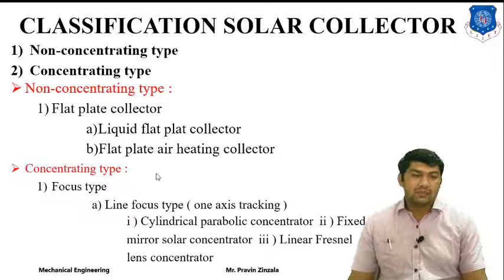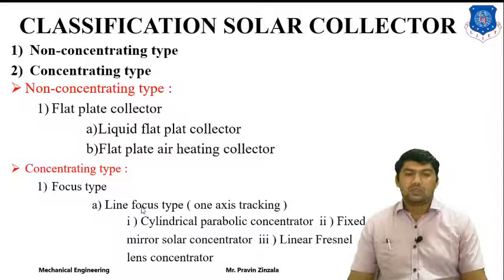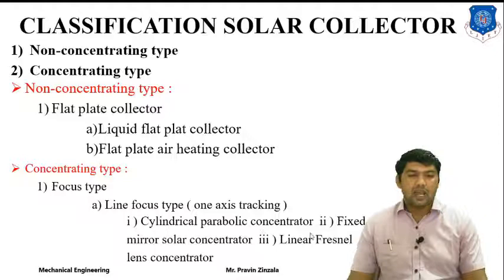The second type is the concentrating type collector, also called focusing type and non-focusing type collectors. Focusing type collectors are further sub-classified into line focus and point focus. Line-focusing type collectors use one-axis tracking — for example, the cylindrical parabolic concentrator (CPC), the fixed mirror solar concentrator, and the linear Fresnel lens concentrator, which are all examples of line-focusing type collectors.